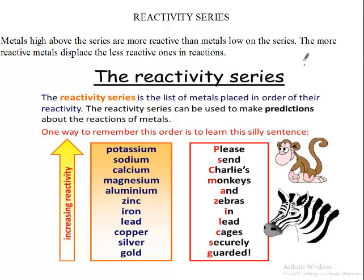So for example, if we have potassium and then let's say copper chloride, this potassium will knock the copper away in a reaction. The reason is because potassium is higher above copper — therefore, potassium is stronger when it comes to reactions.